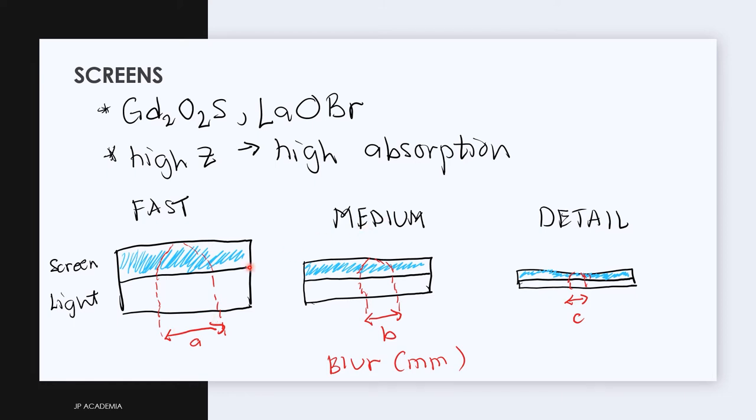This fast screen has a high sensitivity or speed but does not produce a high visibility of detail due to the blur.